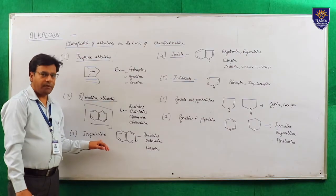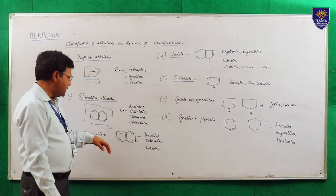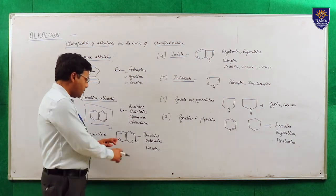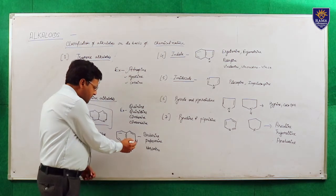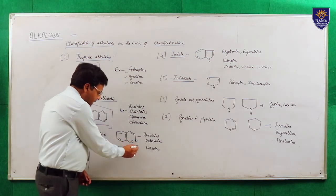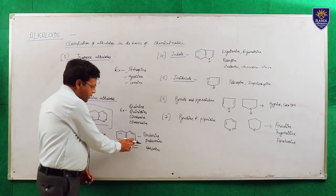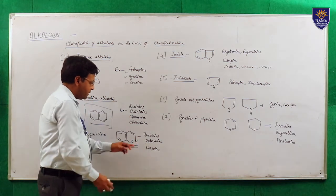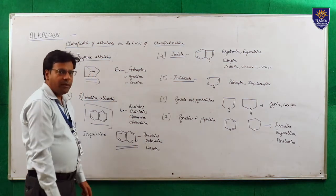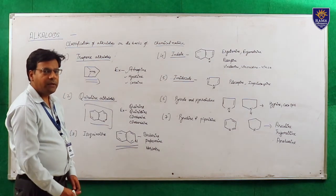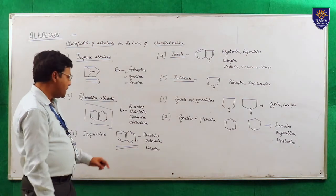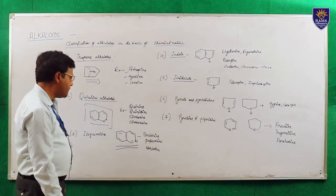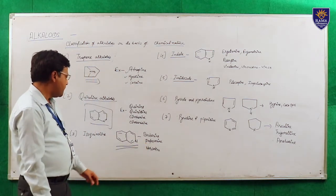Isoquinoline type of alkaloids: in this type, the basic moiety contains nitrogen in the iso-position. Examples are berberine, obtained from Berberis aristata (daru haldi), papaverine and narcotine obtained from Papaver somniferum.